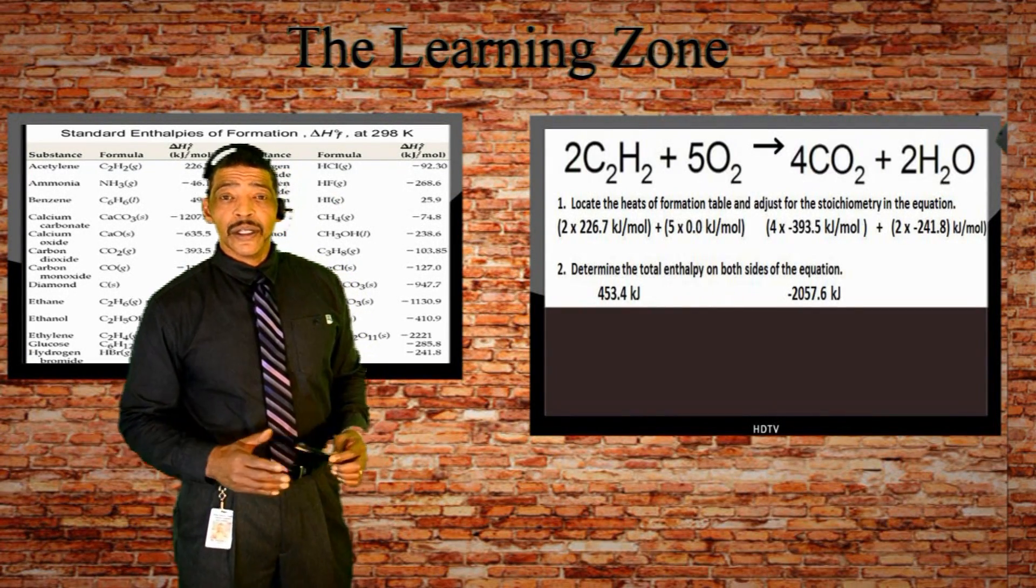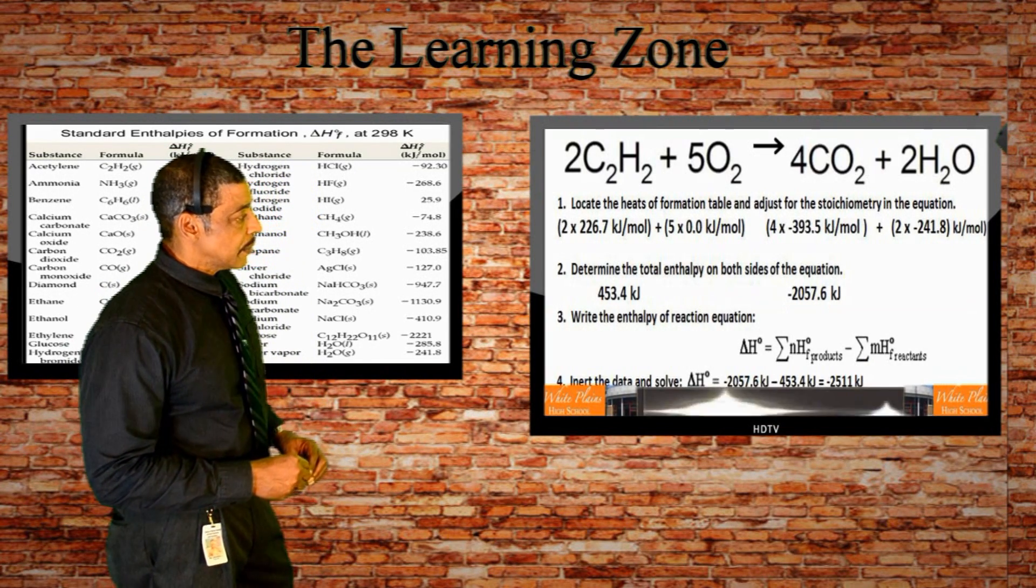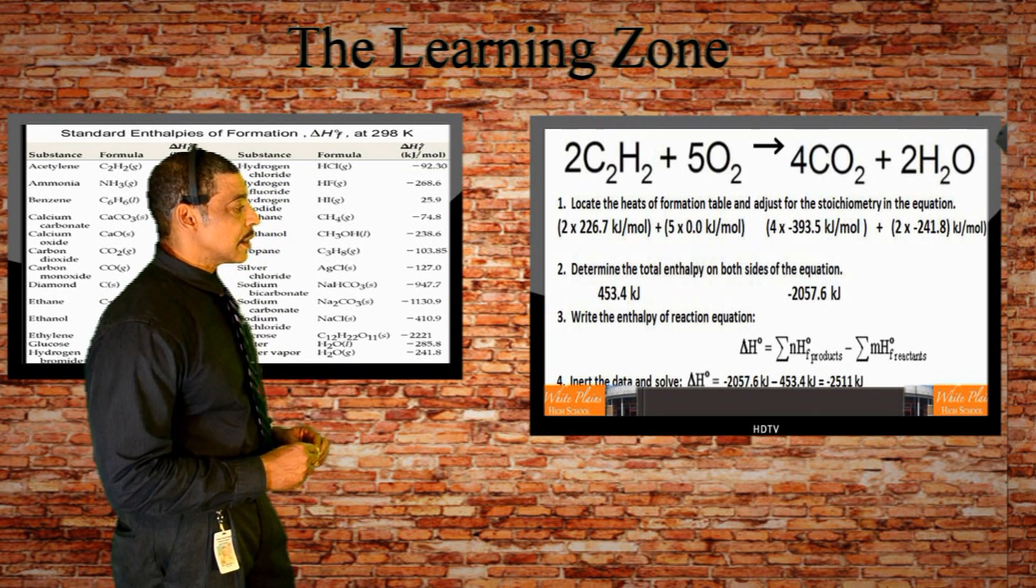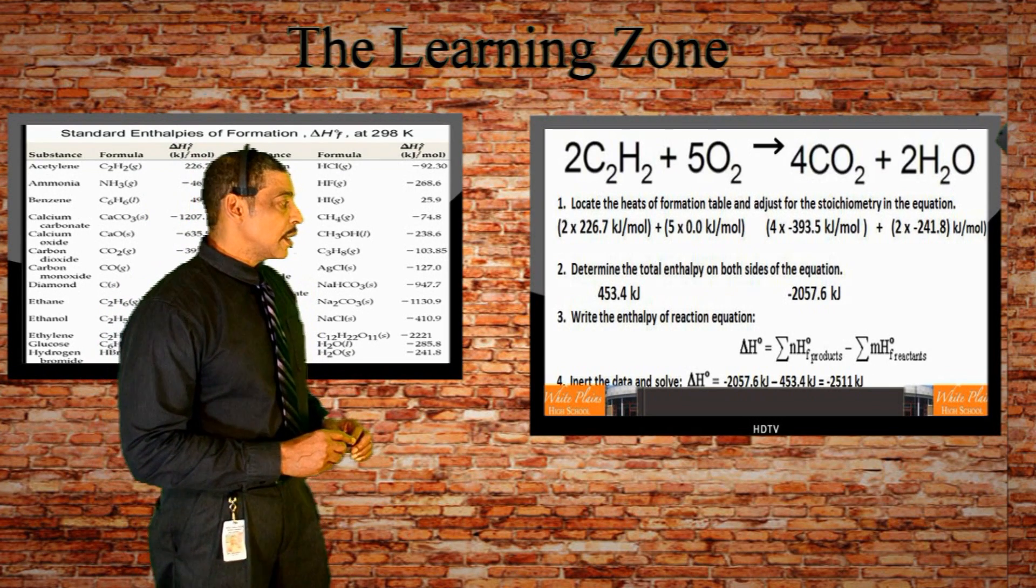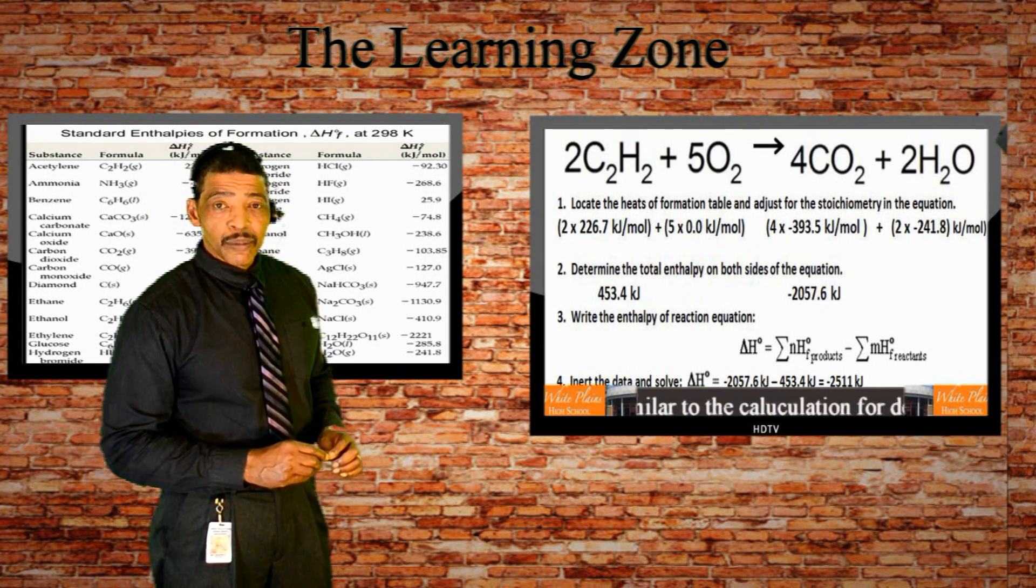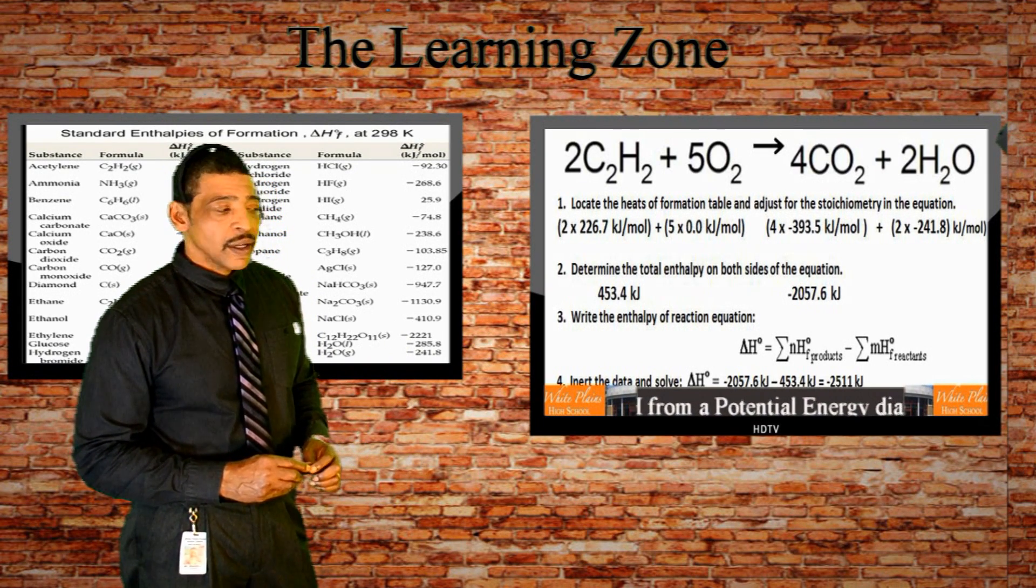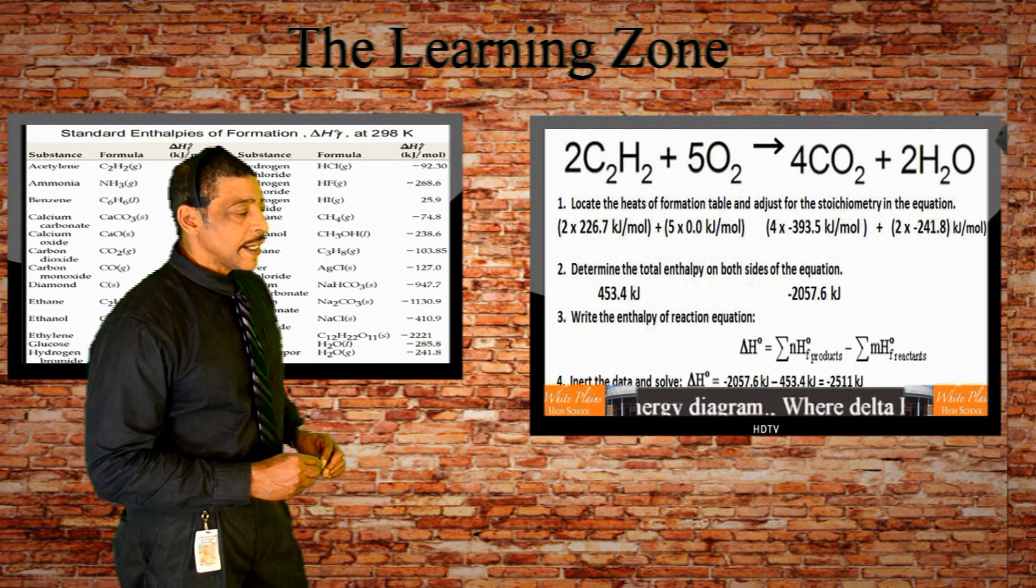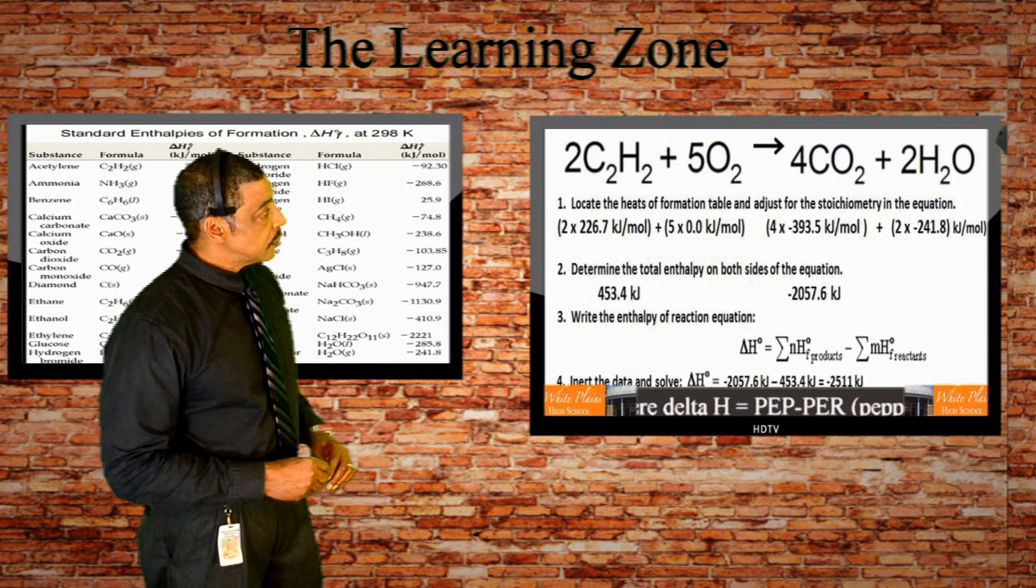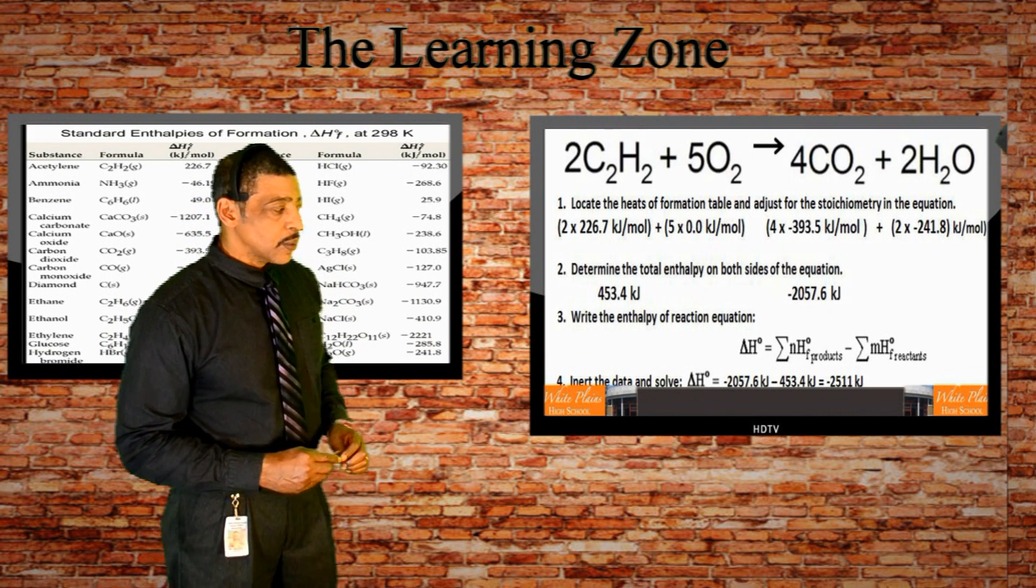Now we simply use the equation for determining the standard heat of reaction, where the standard heat of reaction is equal to the sum of the heats of formation of the products minus the sum of the heats of formation of the reactants, where the n and the n represents the coefficients corresponding to the balanced equation.